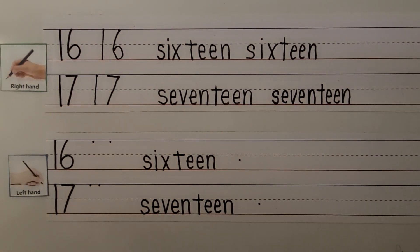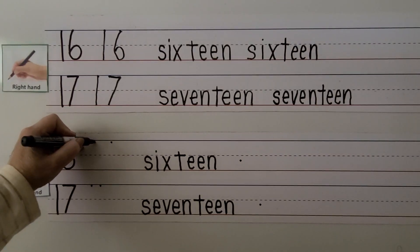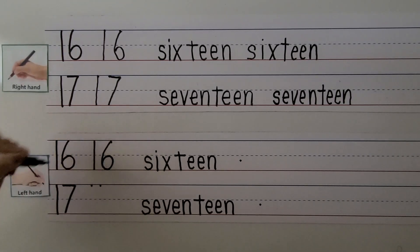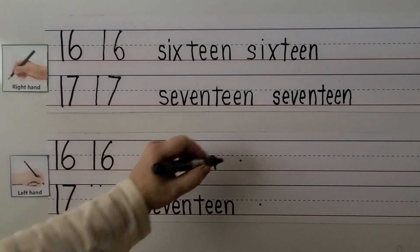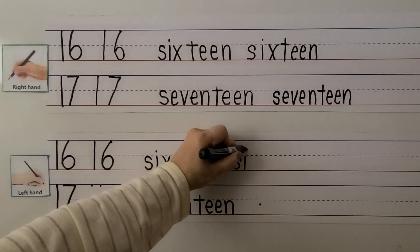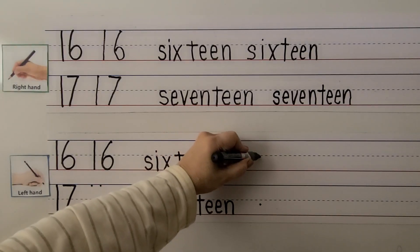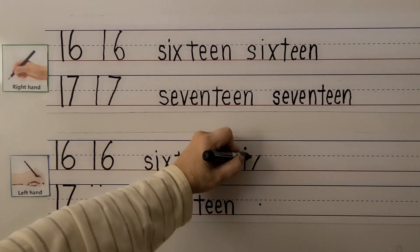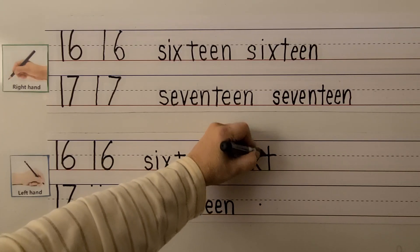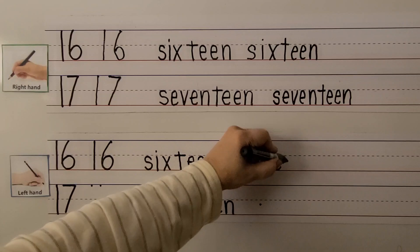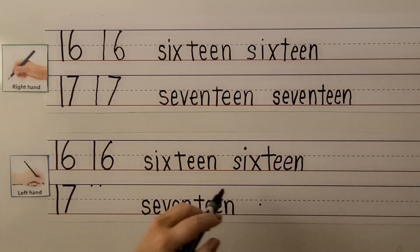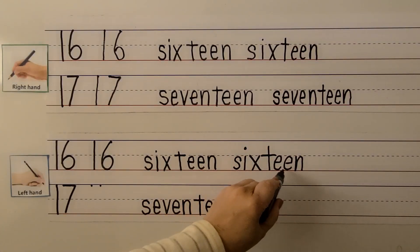We can write the number 16 with our left hand. We make a 1 going straight down, then put a 6 next to it. 16. We can write the word 16: we make our S, then an I — always remember to dot the I — then the X, pulling towards our hand and going the other way. We make our T, crossing on the right side pulling towards our hand. Then E, another E, and N for the teen part. We can see the word: 6 and then teen. 16.